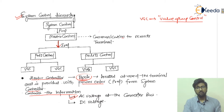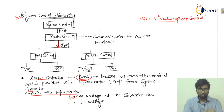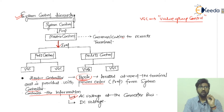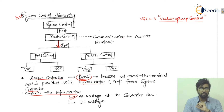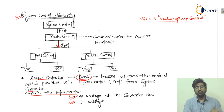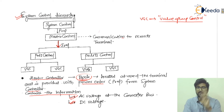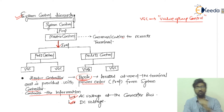Now look at the information the master control contains. The first piece of information is the AC voltage at the converter bus — its magnitude, angle, and the change in voltage for voltage regulation at that point. The second is the DC voltage. So the master control contains two types of information: the AC voltage at the converter bus and the DC voltage.